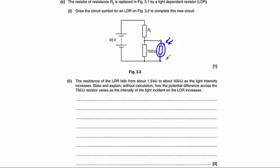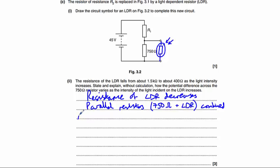Part II explains that when the light intensity increases, the resistance of the LDR decreases. So we need to state and explain without calculation how the potential difference across this 750 ohm resistor, which is also the same as the potential difference across the LDR, varies as the intensity of the light incident on the LDR increases. So the first thing that happens here is that the resistance of the LDR decreases, which means that the parallel resistors,